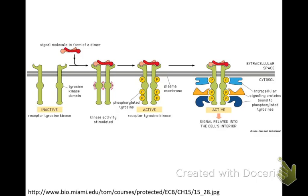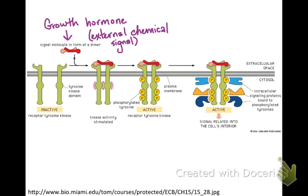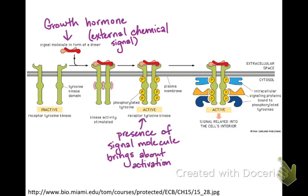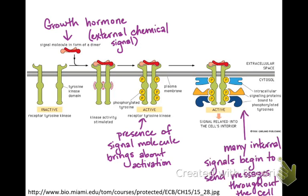Signals can come from outside the cell — something like a growth hormone, which is a chemical signal outside the cell, that interacts with cell membrane proteins, activating them, which in turn activates many other molecules to send signals into the cell's internal environment. But all of these signals, whether they originate outside the cell, like growth hormones or growth factors, or inside the cell, are going to end up as chemical messages inside the cell.